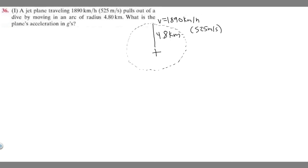Let's go ahead and write down what we're given. So there's two things we want to write down here. We want to write down the radius. So we know the radius is 4.8 kilometers. And we also know the velocity of the plane. So the velocity of the plane is 1,890 kilometers per hour. I'm going to write it in the meters per second one, so 525 meters per second.